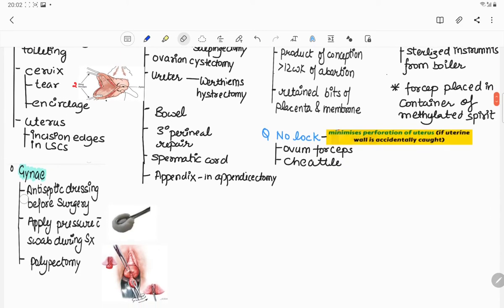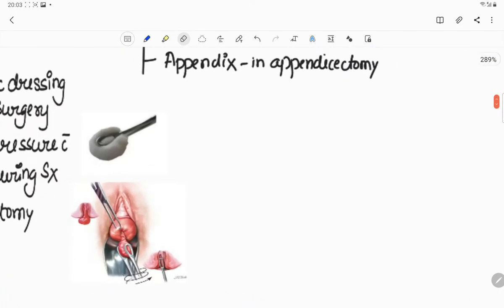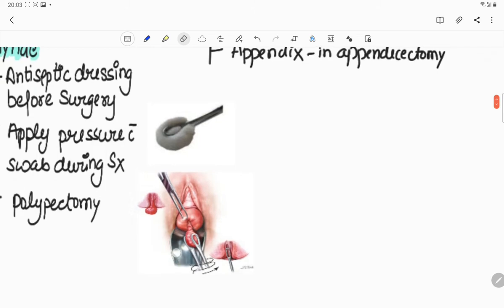Gynecological uses: number one is for antiseptic dressing before surgery and for applying pressure with the swab during surgery and used in polypectomy. For example, in this picture you can see sponge holding forceps holding the polyp and we have to rotate it by 360 degrees.